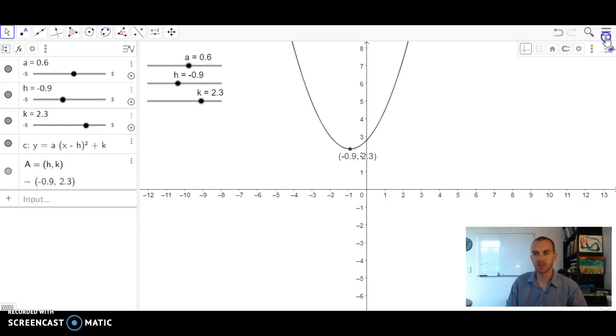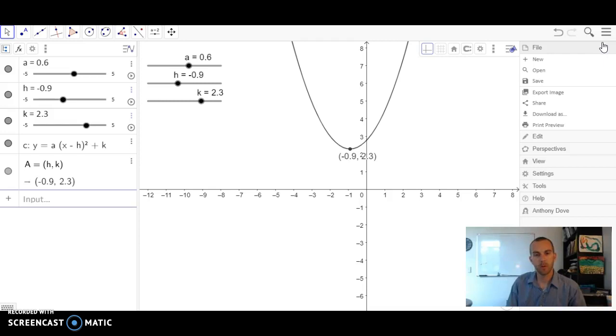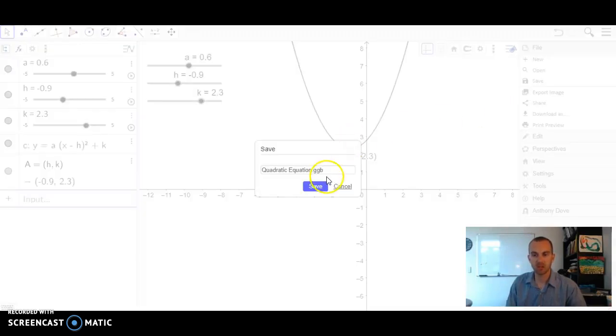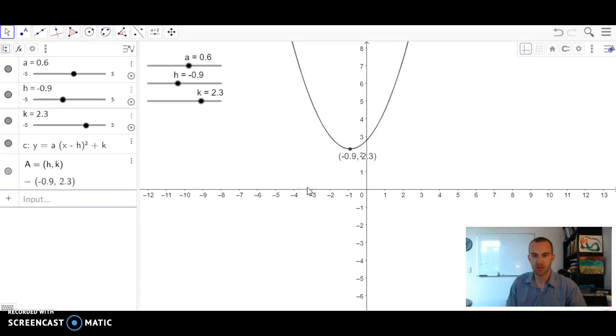There's a couple ways I can do it. The easiest way - if I want you to send me a file - I would go to download as GGB. That's GeoGebra, and I push save. Down here you can see it automatically saves. It's going to save to whatever download file you have set up for your computer.